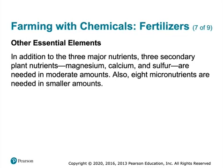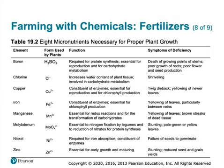Besides the major nutrients nitrogen, phosphorus, and potassium, we have secondary nutrients: magnesium, calcium, and sulfur. We need those in relatively high amounts, not as much as nitrogen, phosphorus, and potassium. There are also eight micronutrients needed in smaller amounts, and they do various things for the plant as well.